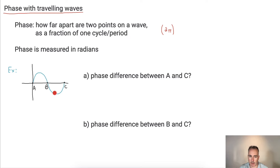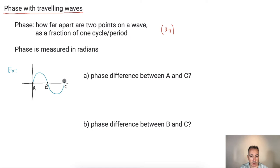Let's look at this one right here. We've got a curve, and A, B, and C are here. We're asking first of all what's the phase difference between A and C. Before we can do this, it really helps to label everything. We're going to label this one right here — the end is going to be 2π because that's one whole cycle. Half of that must be π. And this is π over 2.